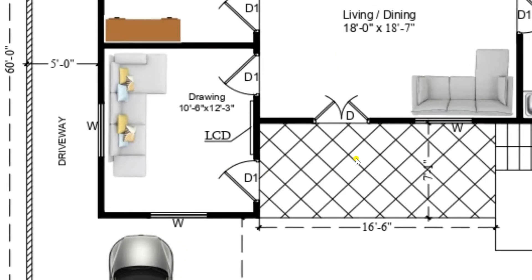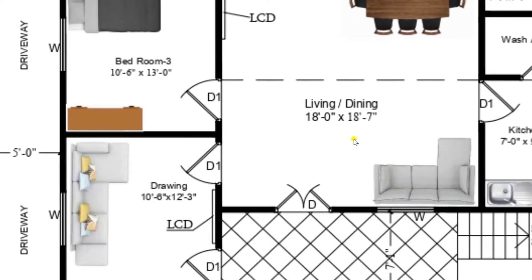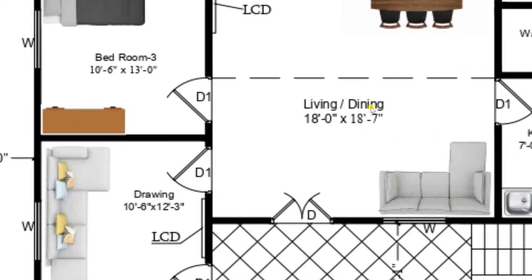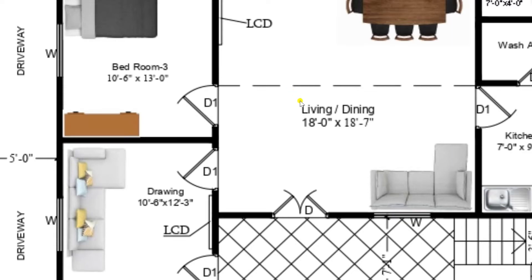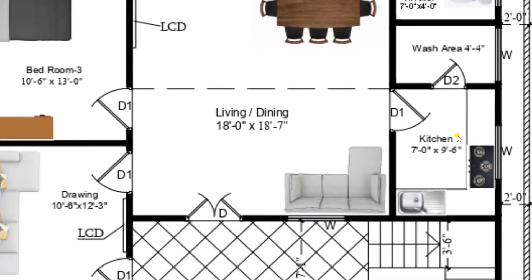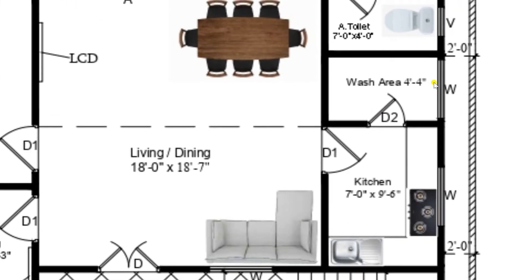From the ramp platform you can also enter into the living or dining room through the main door, where curtains and a sofa are provided. The living or dining room has a dimension of 18 feet by 18 feet 7 inches. From this living room you can enter the kitchen, which has a dimension of 7 feet by 9 feet 6 inches. The kitchen is attached with a wash area of 4 feet 4 inches, is fully ventilated, and the wash area can be used for multipurpose domestic utility use.